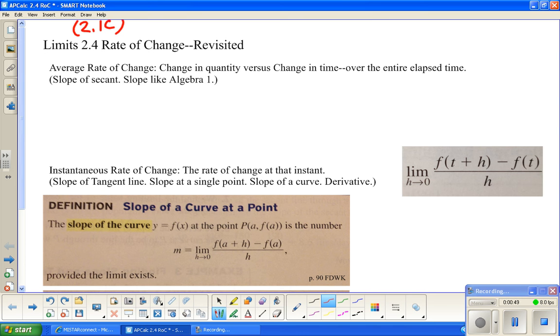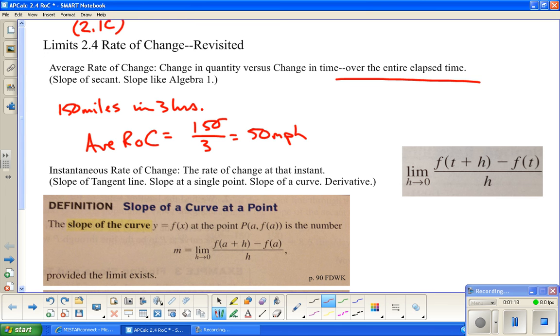Just a reminder that Average Rate of Change is an overall change in quantity versus change in time over the entire elapsed time. An example might be if we drove 150 miles in 3 hours, on average the average rate of change would be just how far we went divided by how long it took, and that would be 50 miles per hour.